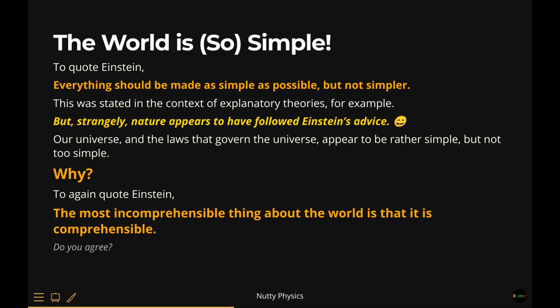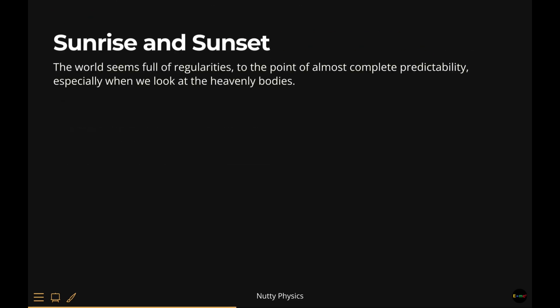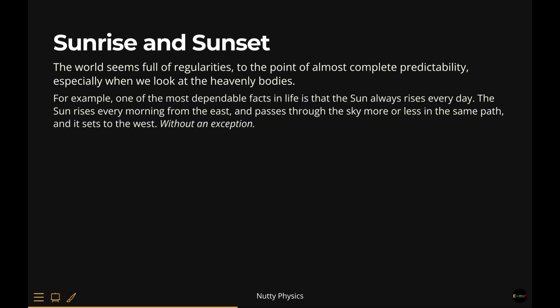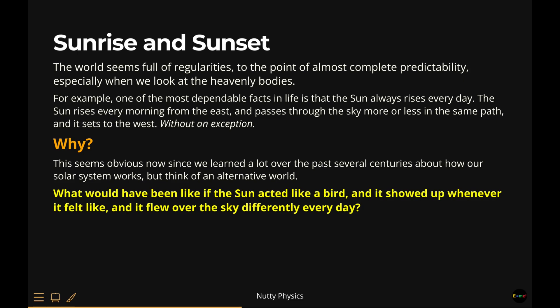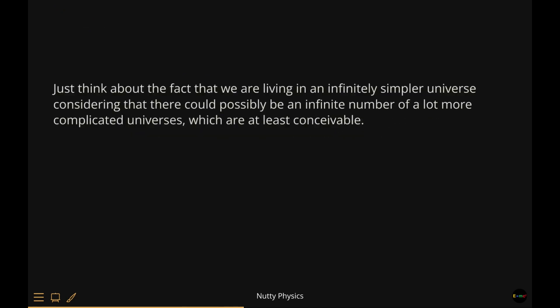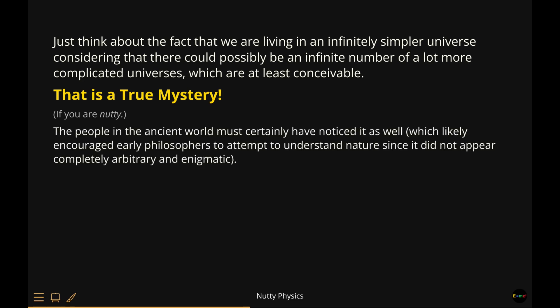Incidentally, this particular view of Einstein, the most incomprehensible thing about the world is that it is comprehensible, was an influence of Immanuel Kant. The Sunrise and Sunset. This is a true mystery. Just think about the fact that we are living in an infinitely simpler universe, considering that there could possibly be an infinite number of a lot more complicated universes, which are at least conceivable. This likely encouraged early philosophers to attempt to understand nature, since the world did not appear completely arbitrary and capricious. So, why is our universe rather simple, but not as simple, and not too simple to be boring?